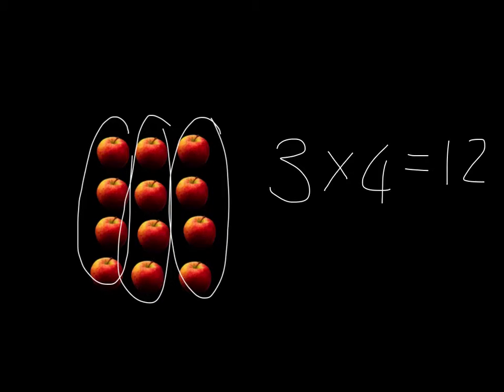So basically, from the same picture, we can see 4 groups of 3 apples is 12, as well as 3 groups of 4 apples is equal to 12.